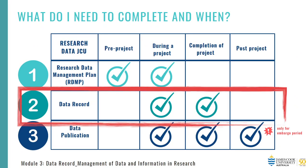A data record can be completed at different times throughout your research project. As you can see from this table, sometimes a data record can be created during a project — for example, when publishing thesis chapters — or it can be completed at the end of your project. It's also important to note that we launched our new data repository platform, Research Data JCU, in January of 2021. So any projects commencing from 2021 onwards require a research data management plan, a data record and a data publication. For example, if you are a HDR candidate and in 2021 are already part way through your research project, a data record and data publication is required, but you are not required to retrospectively complete a research data management plan. The added bonus of linking your data record from your RDMP is that some of the fields will be auto-populated, saving you double entry and time.